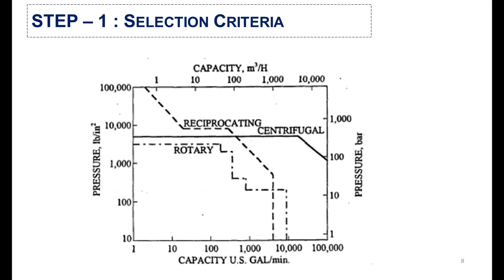In the first step, according to your requirement — whether it is to handle a higher capacity of fluid or to generate higher pressure at the downstream — you will select the pump. If your requirement is to deliver a higher fluid capacity at a medium pressure range, you will select a centrifugal pump. But if your target is to deliver fluid at high pressure with low capacity, then you will select a positive displacement pump.